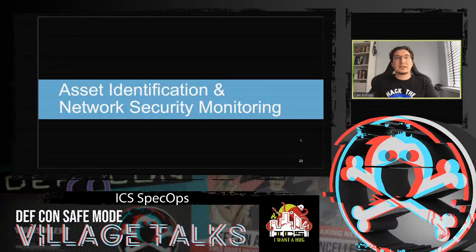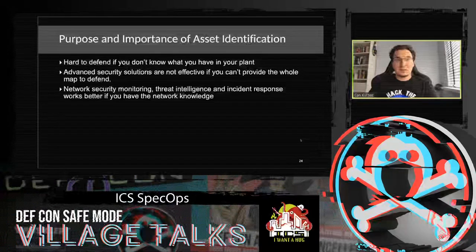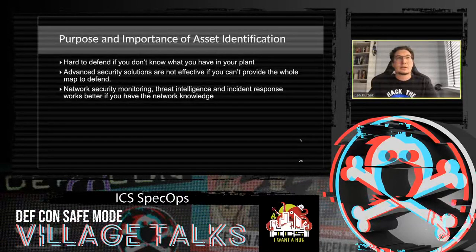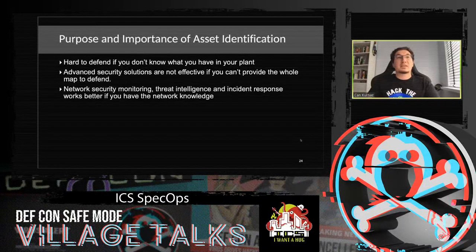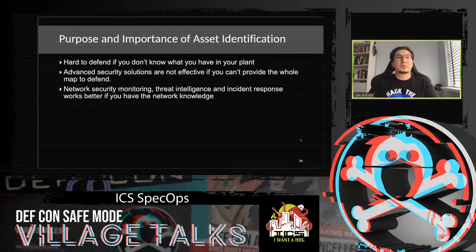For asset identification and network security monitoring: it is really hard to defend if you don't know what you have in your plant, facility, or environment. If you don't know what's there, you cannot protect it. Advanced security solutions are not effective if you can't provide the whole map to defend. Network security monitoring, threat intelligence, and incident response all work better if you have internal network knowledge.